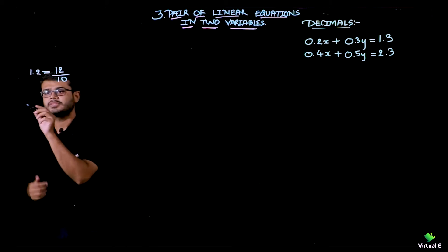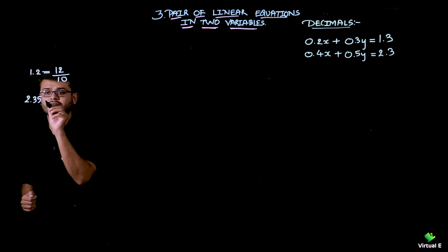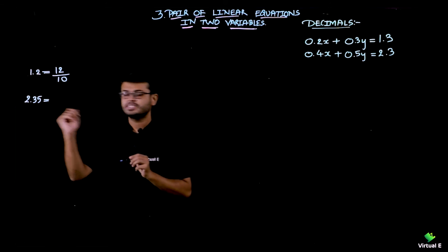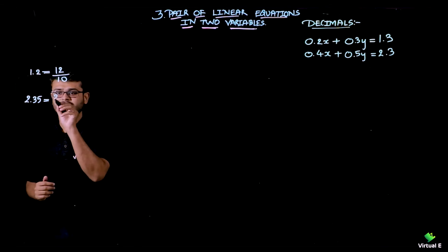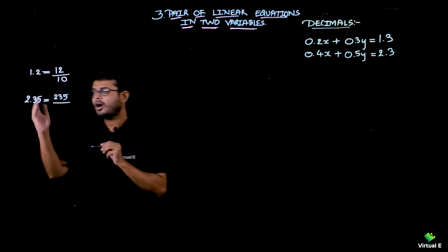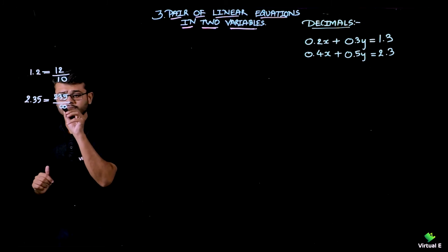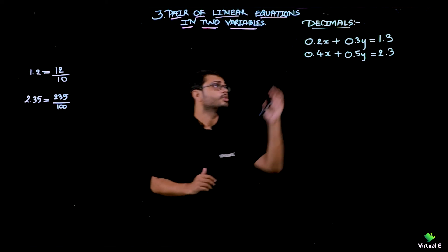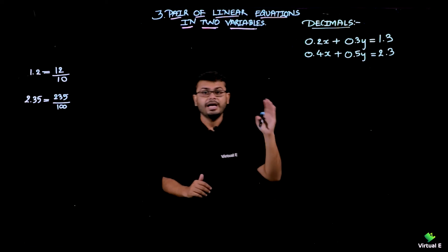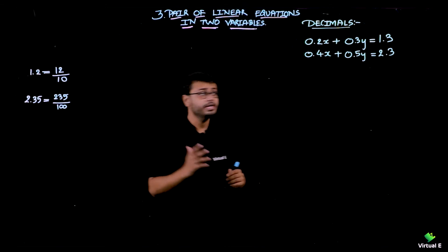Let's do one more problem. Take 2.35 — first step, write without the decimal as it is: 235. Then count how many places after the decimal — there are two. So we write two zeros with a 1 before it, giving 100. So 2.35 becomes 235 over 100. We are going to use this concept to remove the decimal and convert the equation into fraction form.